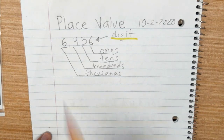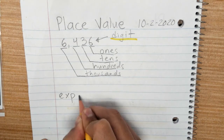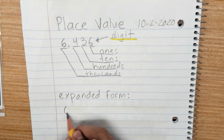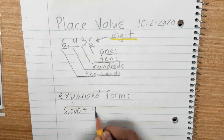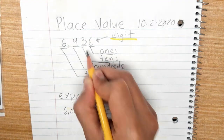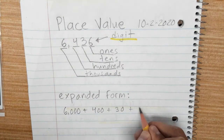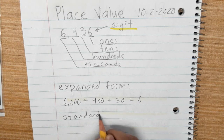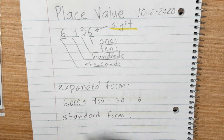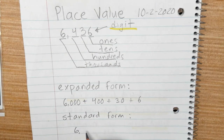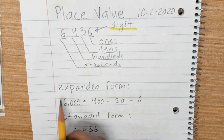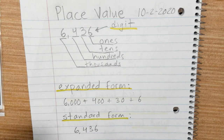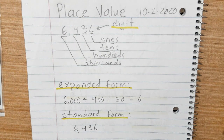Today we're going to focus again on expanded form. Expanded form is when you write the number like this: six thousand plus four hundreds plus three tens — thirty — plus six ones. You look at the place value of each number. And standard form is when you write it just in the regular form: six thousand four hundred thirty-six. Our vocabulary today: digit, expanded form, and standard form. Thank you very much, I will see you later.